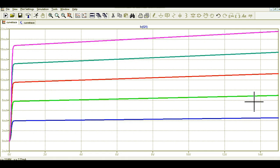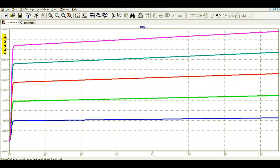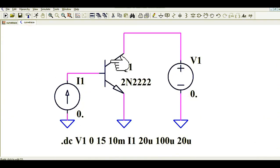You can see if you are changing the base current from 20 microampere to 100 microampere in the step of 20 microampere and you can see the impact on the collector current. You can see here it's from 4 milliampere to around 20 milliampere. That is how you can do the DC analysis of NPN transistor.